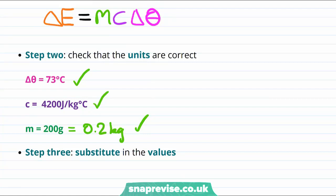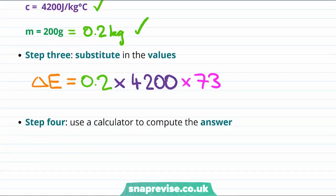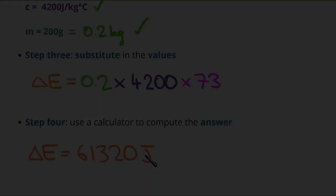Now that all quantities are in the right units, we substitute them into our equation: the energy change equals 0.2 multiplied by 4200 multiplied by 73. Putting this into a calculator gives a total energy change of 61,320 joules.